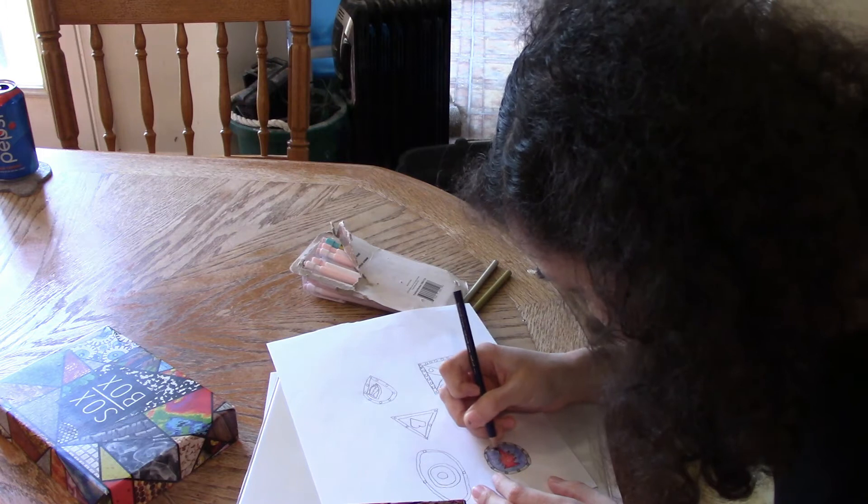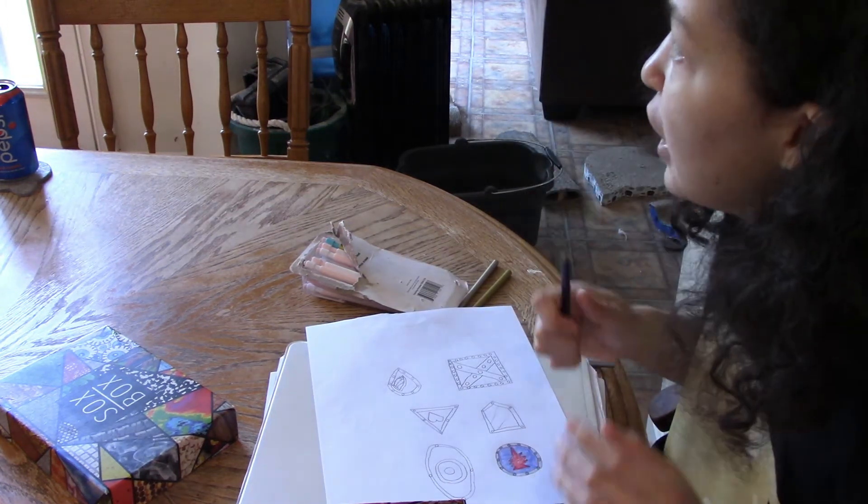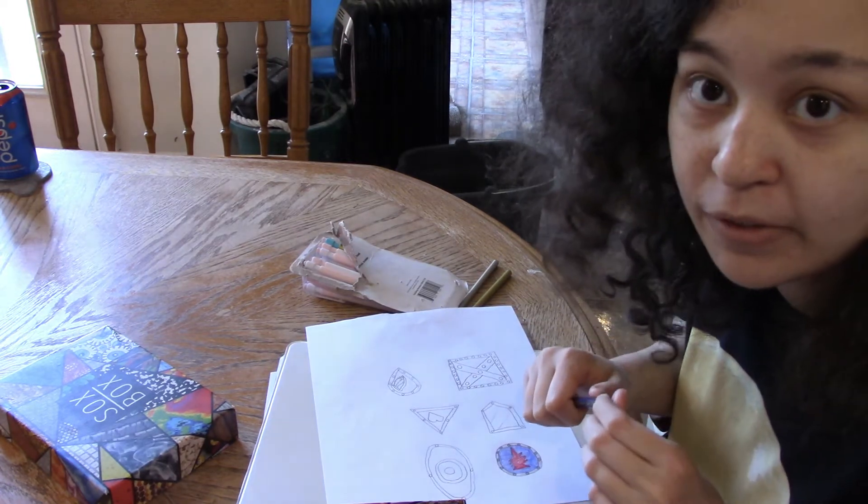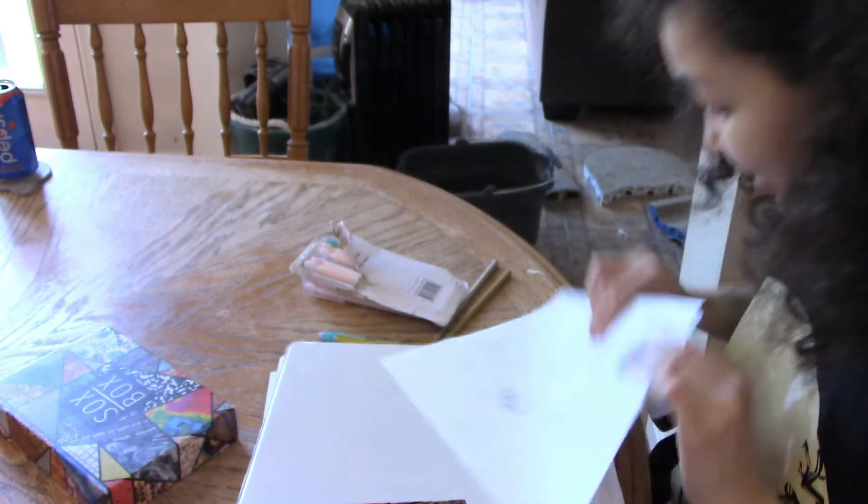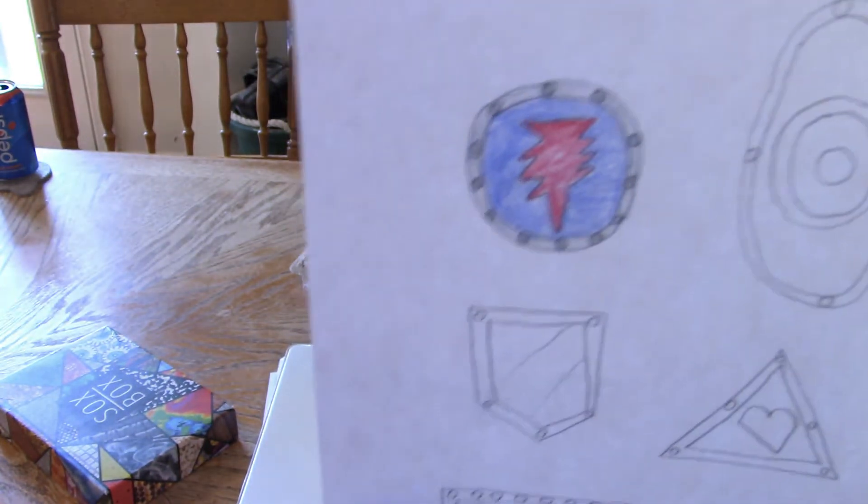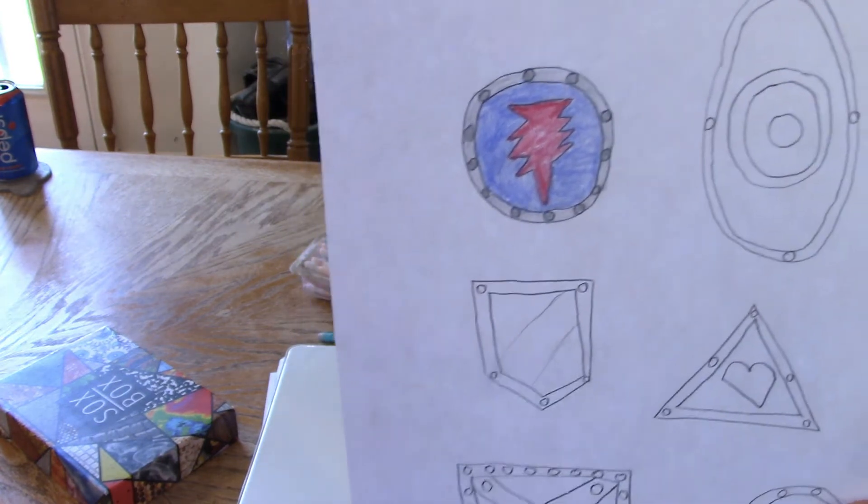You know the colored pencil packs always say colors may vary. And it's true. You can have like four colored pencils that all say the same color and from the same company, and they can all look different. So here's what the first shield looks like now colored in.